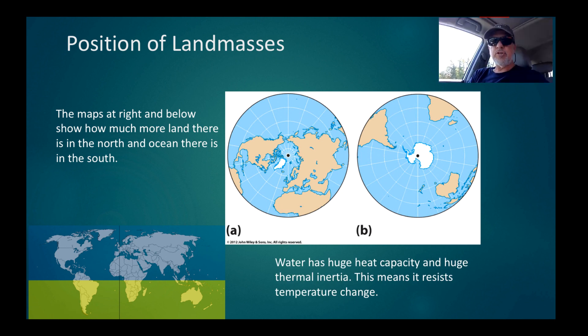Water has a huge heat capacity and huge amount of thermal inertia as a result. This means it resists temperature change. So the southern hemisphere resists temperature change compared to the northern hemisphere. The land doesn't quite contribute to as much heating during the southern summer, nor does it contribute as much to cooling during the southern winter.